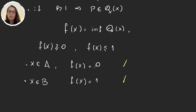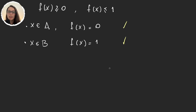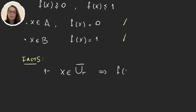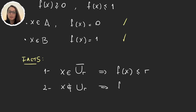Now we have to prove that f is continuous. But before doing this, let's prove a few facts that will be useful. The first fact is that if x is an element in the closure of U_r for some rational number r, then f(x) is going to be less than or equal to r. And the second fact is that if x is not an element in U_r, then f(x) is greater than or equal to r.